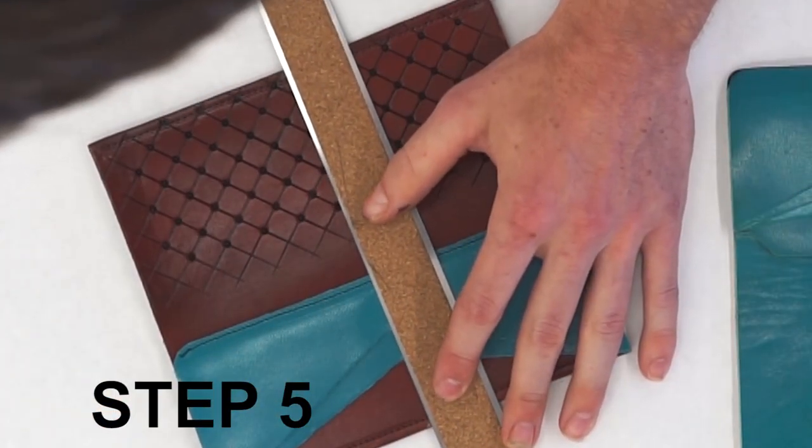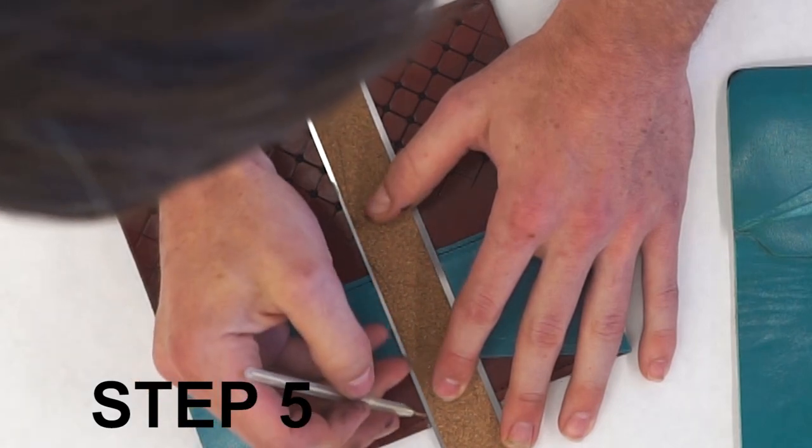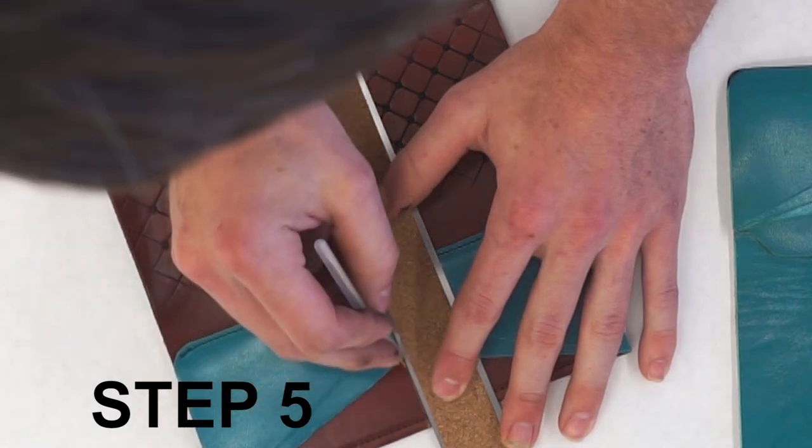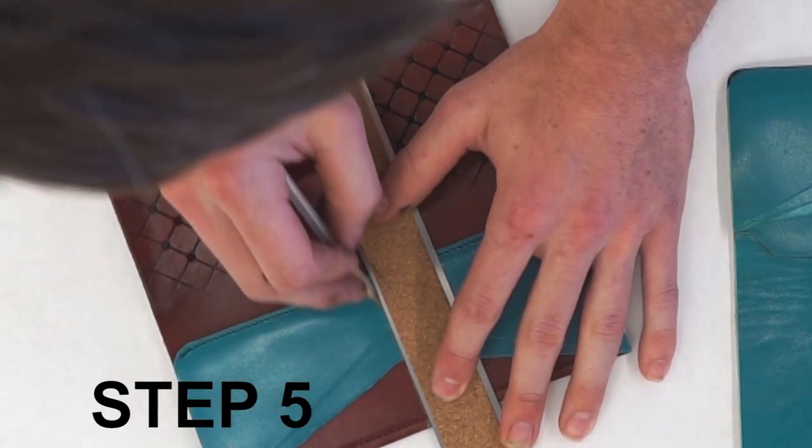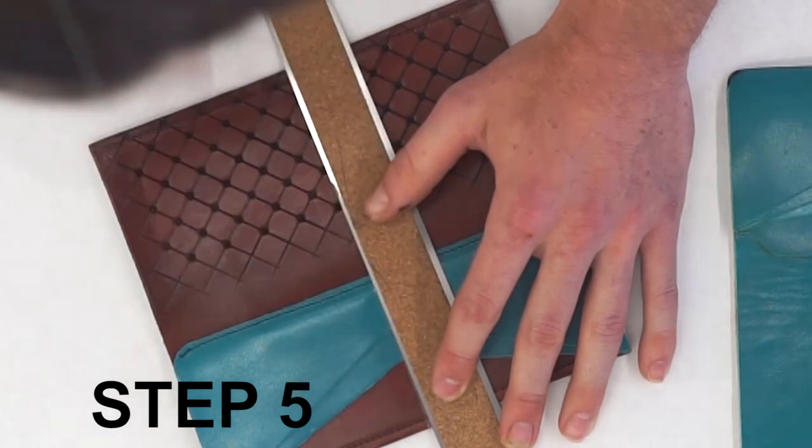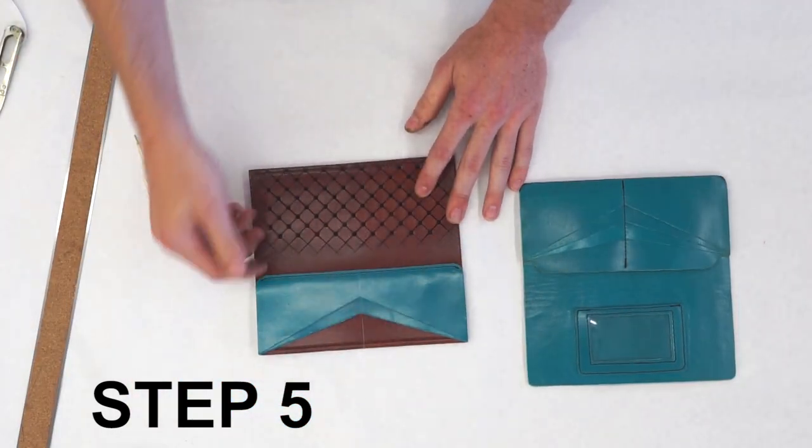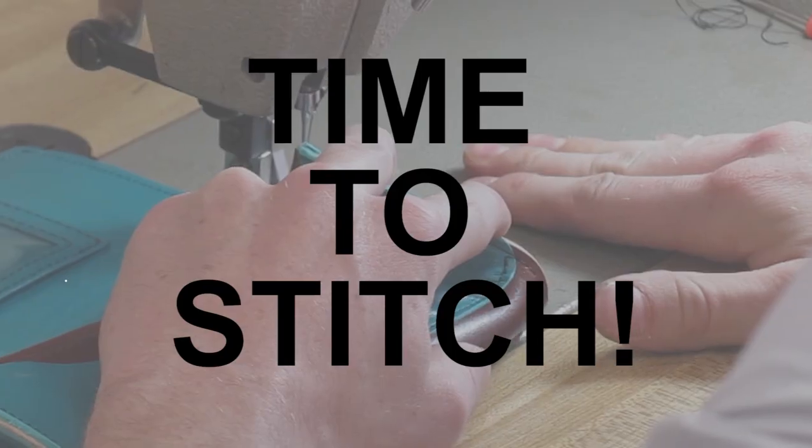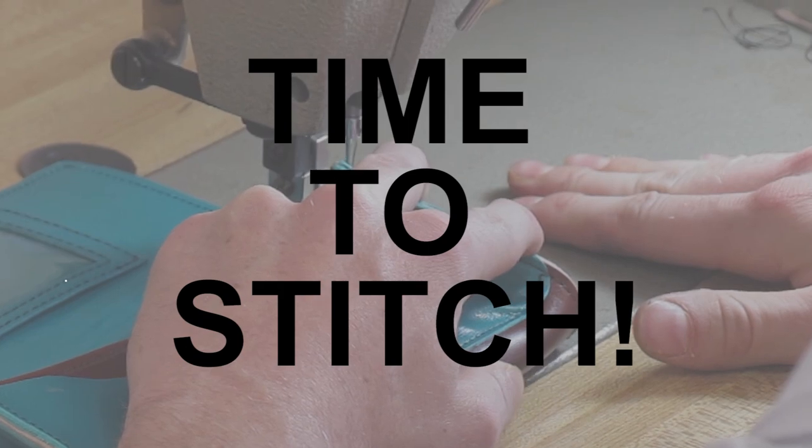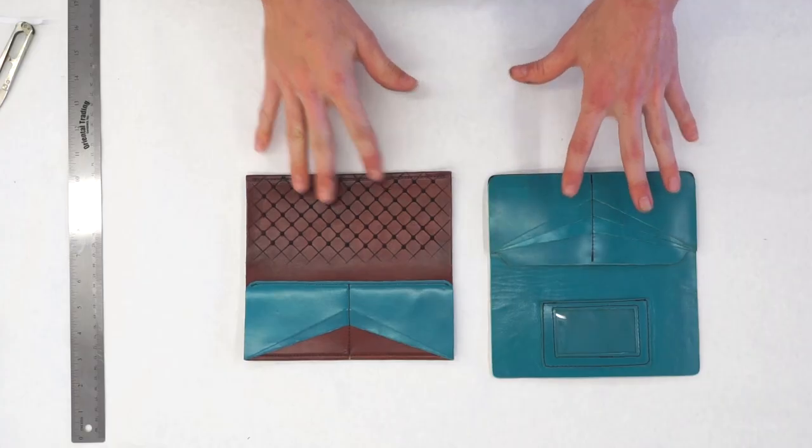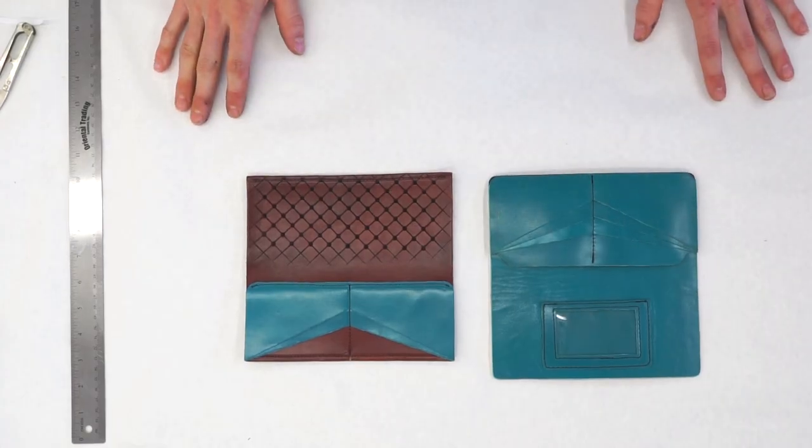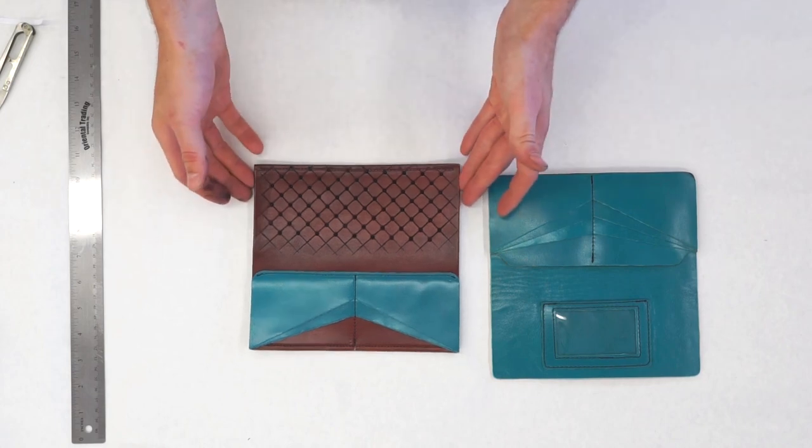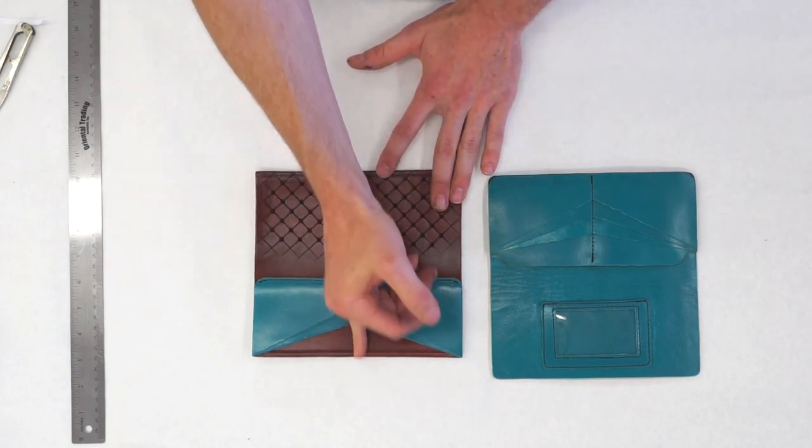Take your handy dandy ruler, straight edge, and really lightly mark a line just right down the center. That will serve as a nice little guide for your stitch to divide the pockets so you'll have four credit card pockets that will end up on the front of the clutch.